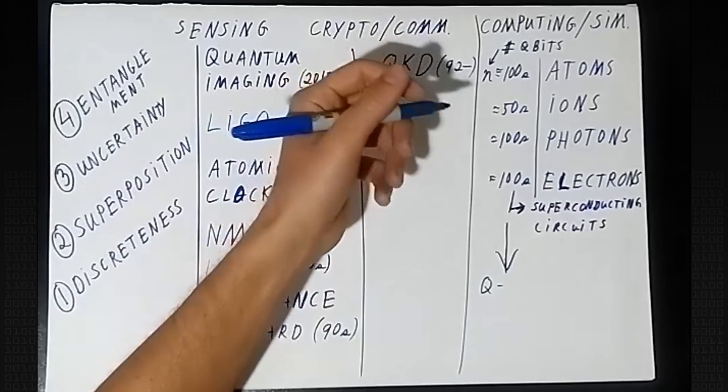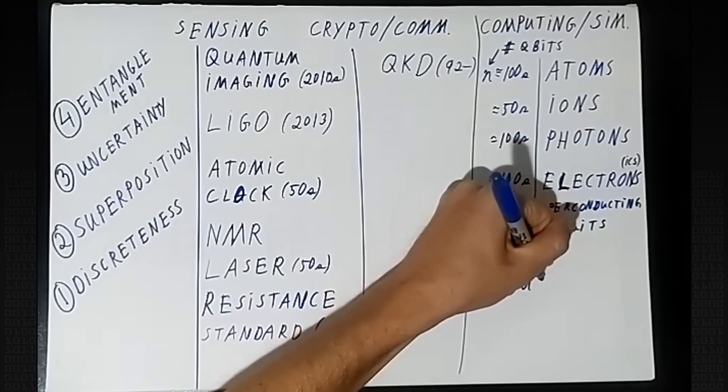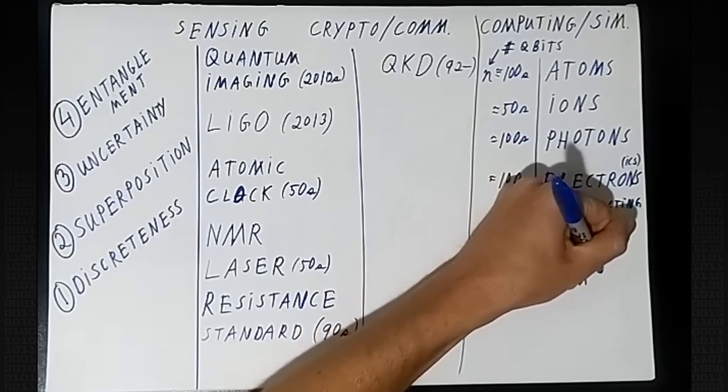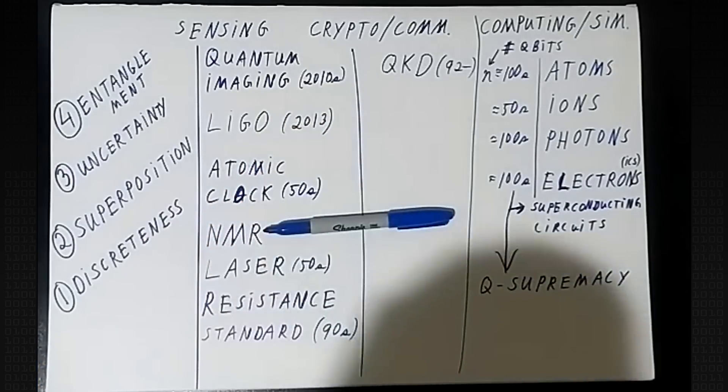With quantum electronics, what has allowed us to achieve quantum advantage — or as it was originally called, quantum supremacy — is roughly the ability of a quantum system to do something faster than a classical one. It's not necessarily doing anything useful, but it is doing something. This shows the system is at least using some quantum features; otherwise it would be classical and we could simulate it classically on a classical computer just as fast.